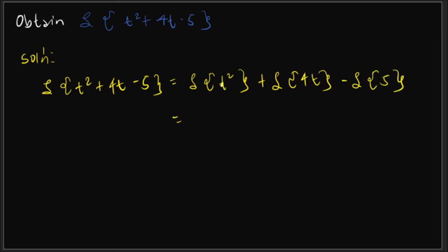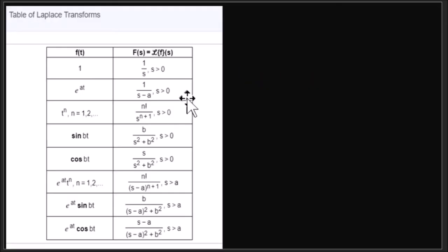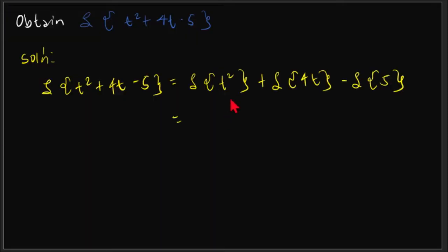For the first term, t squared, this is t to the n where n equals 2. Going back to our table, the Laplace transform of t to the n is n factorial over s raised to the power of n plus 1. With n equal to 2, that gives us 2 factorial over s to the power of 3.